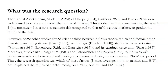Moreover, some studies found weak or non-existent relations between beta and average stock returns during the 1963–1990 period. Thus, the research question was: which factors — including beta, size, leverage, book-to-market, and earnings over price — best explained the returns of stocks trading on the NYSE, Amex, and NASDAQ?